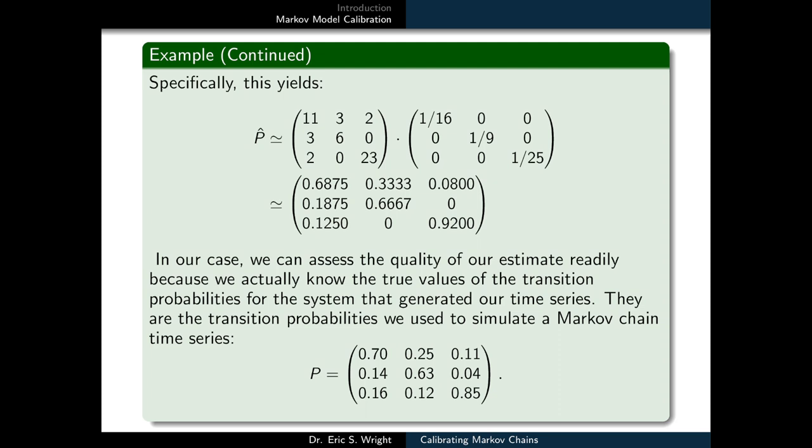In our case, we can actually assess the quality of our estimate pretty readily because we actually know the true values of the transition probabilities for the system that generated our time series. They are the transition probabilities that we use to simulate a Markov chain time series in previous examples. And we just use them to simulate a new time series for this example.